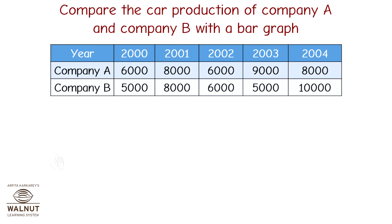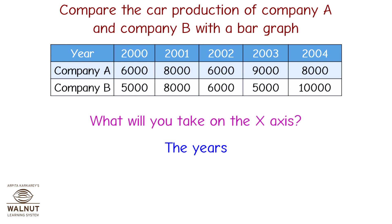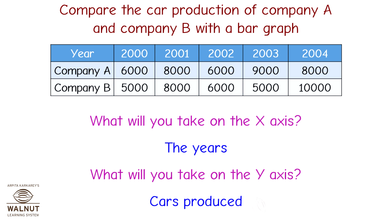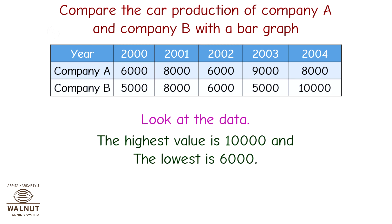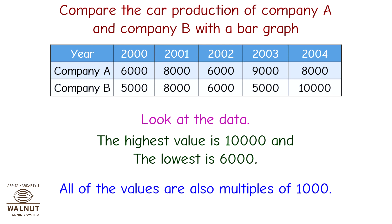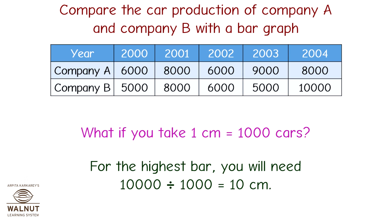Next example: compare the car production of Company A and Company B with a bar graph. On the x-axis we take the years, and on the y-axis, cars produced. The highest value is 10,000 and the lowest is 6,000 — all multiples of 1,000. If we take 1 centimeter equal to 1,000 cars, the highest bar needs 10,000 divided by 1,000, equal to 10 centimeters — that seems okay. So take that scale and draw the joint bar graph.